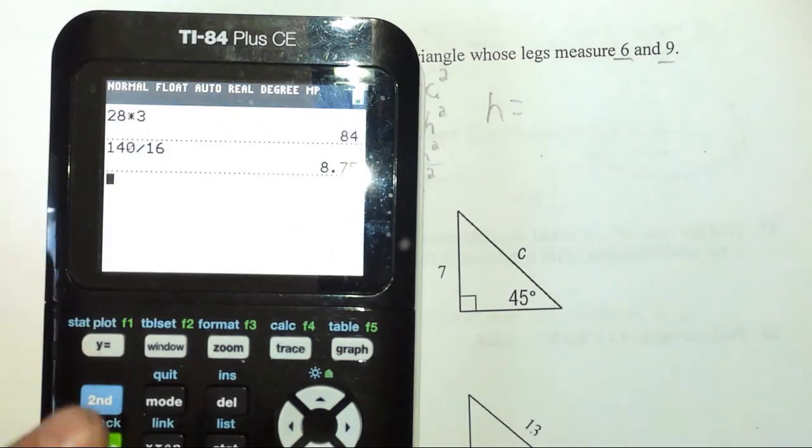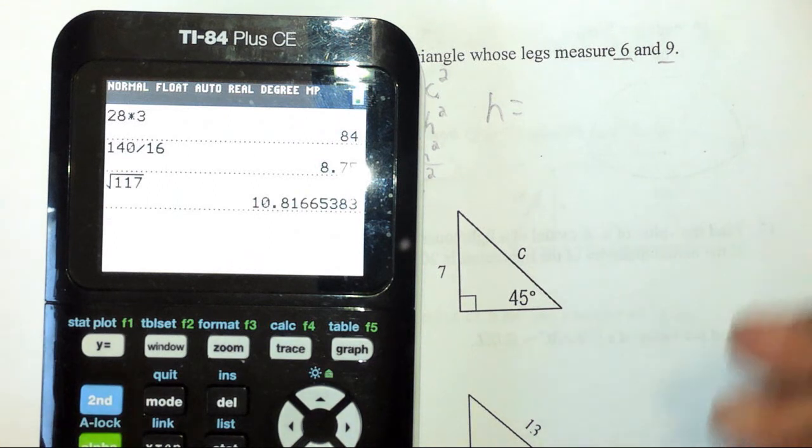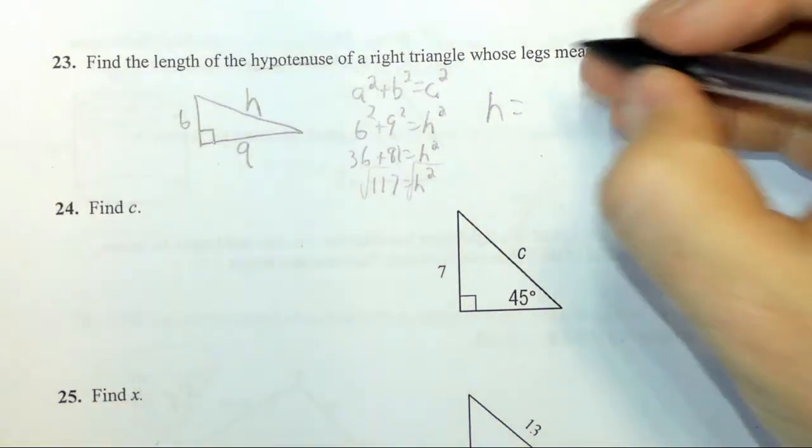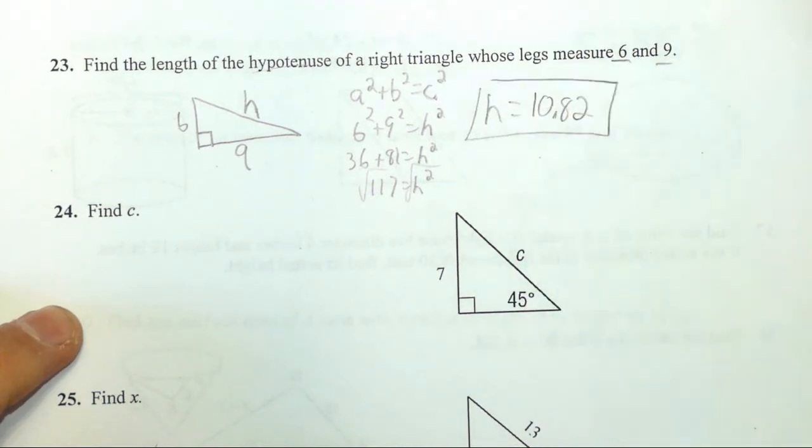Go over to the calculator. Square root of 117 gives me 10.82. And we're finished.